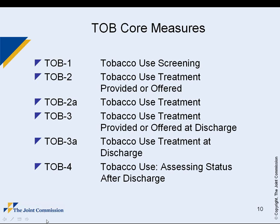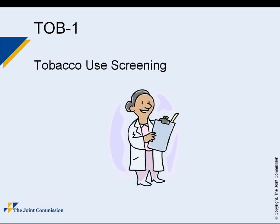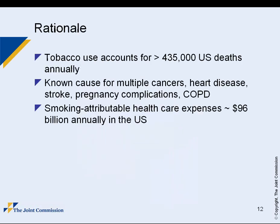We're going to talk first about the Tobacco Core measures. This slide displays four distinct measures in this set, based on the 2008 Treating Tobacco Use and Dependence clinical practice guidelines update, grounded in solid evidence. Tobacco-1 is the tobacco use screening measure, in the domain of assessment and screening. This is a process measure where a higher rate is noted for improvement. Tobacco use is responsible for over 400,000 deaths annually and is a known cause of cancers, heart conditions, stroke, pregnancy complications, and lung disease.